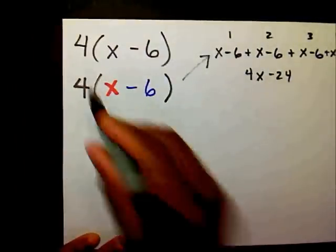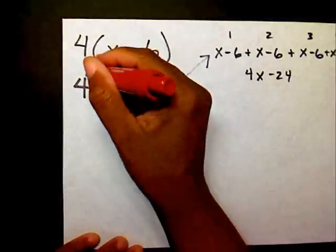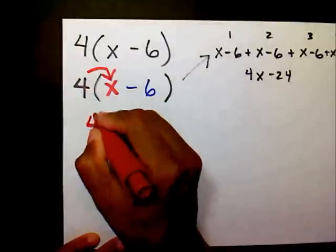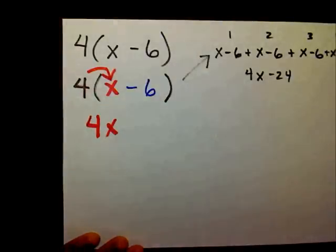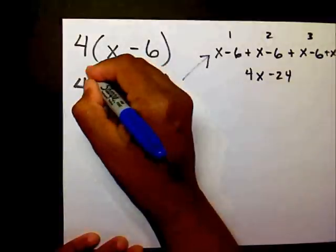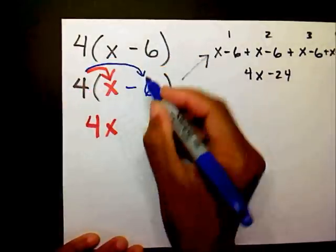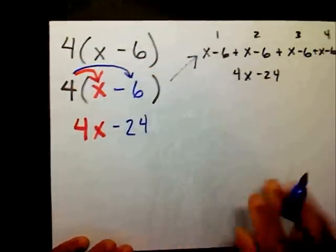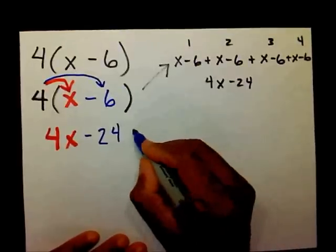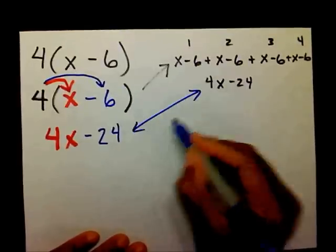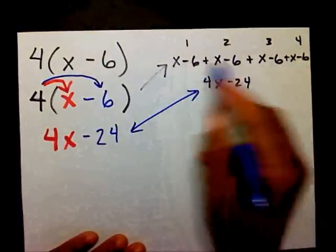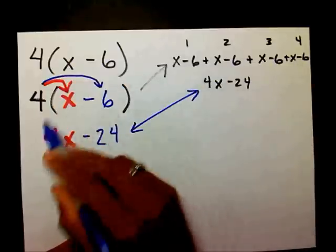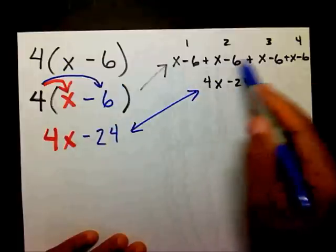We're going to take this 4 and multiply it times the x, which gives us 4x. And we're going to take the 4 and multiply it by negative 6, which gives us negative 24. As you can see, you have the same answer. This long way is what it actually means, and the distributive property is the shortcut way.